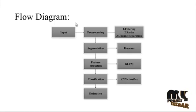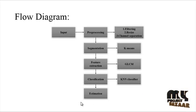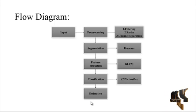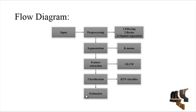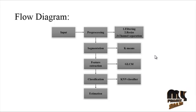For example, clicking an apple image results in the fruit being identified and classified as apple. In the estimation process, true positive, true negative, false positive, false negative, accuracy, specificity, and sensitivity are all calculated for the input image. These are the overall steps in the flow diagram.